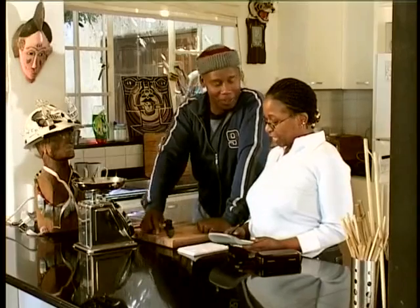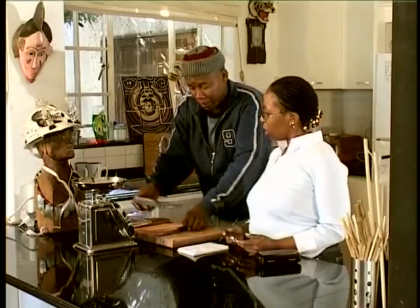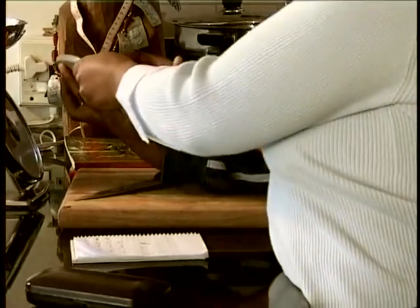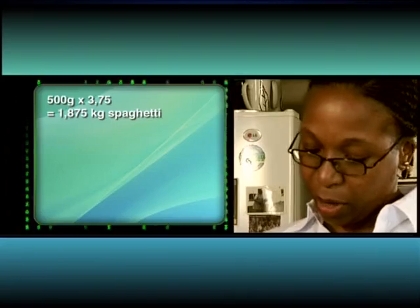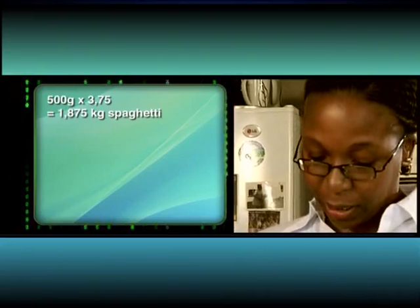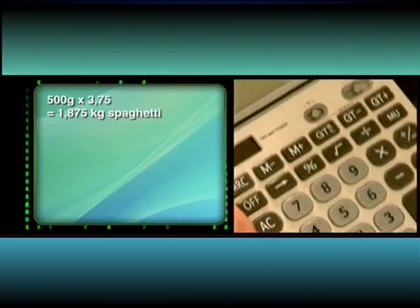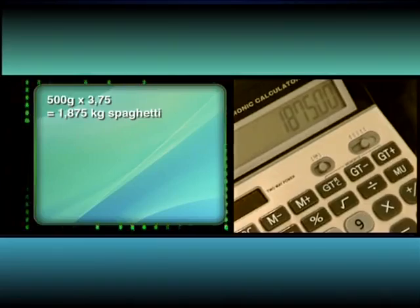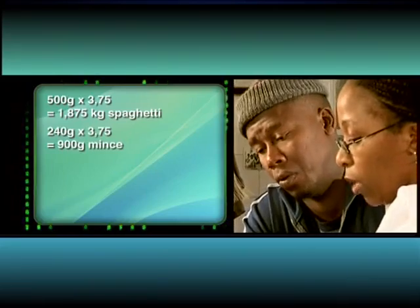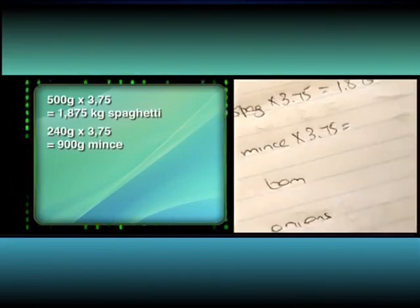But let's get back to the recipe. I wanted to convert the mains. I'll show you. Now we have 500 grams spaghetti times 3.75 is 1,875 grams. And then we have mince, which is 240 grams times 3.75 is equal to 900 grams.